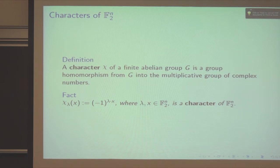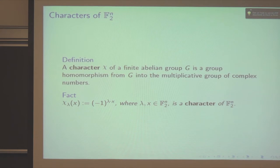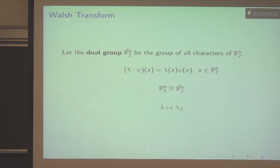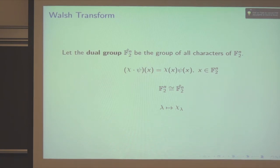A character chi of a finite Boolean group G is a group homomorphism from G into the multiplicative group of complex numbers. For GF(2)^n, each character chi_lambda maps an input x to (−1)^{lambda · x}, where lambda is the associated vector. The group of all characters of GF(2)^n forms a dual group that is isomorphic to the original group, where each vector lambda in GF(2)^n maps to its character chi_lambda — denoted GF(2)^n-hat.